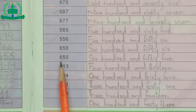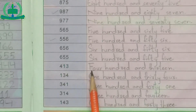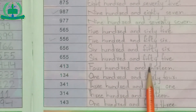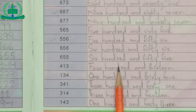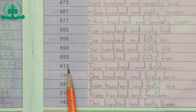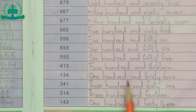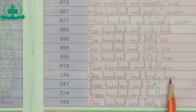655: six hundred and fifty-five. 413: F-O-U-R, H-U-N-D-R-E-D, A-N-D, T-H-I-R-T-E-E-N. 413: four hundred and thirteen. 134: O-N-E, H-U-N-D-R-E-D, A-N-D, T-H-I-R-T-Y, F-O-U-R. 134: one hundred and thirty-four.